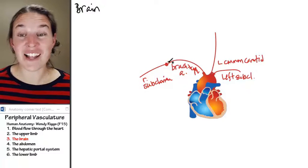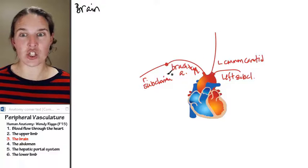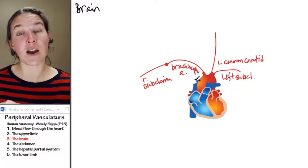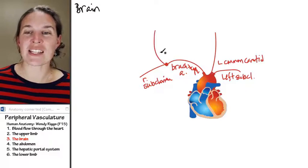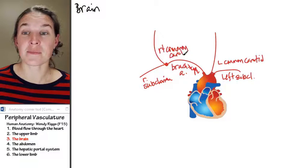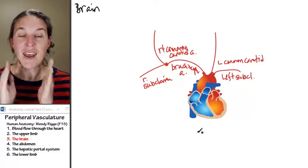Now, brachiocephalic artery. Do you remember what the anatomical structure was that told us we are no longer in subclavian, we are now in brachiocephalic? It was our friend the right common carotid artery, and they're headed up.